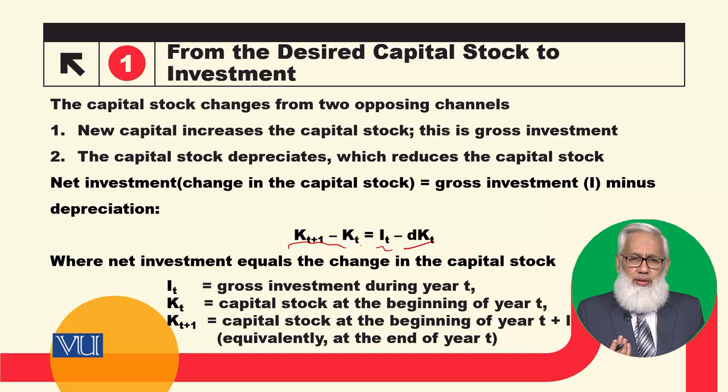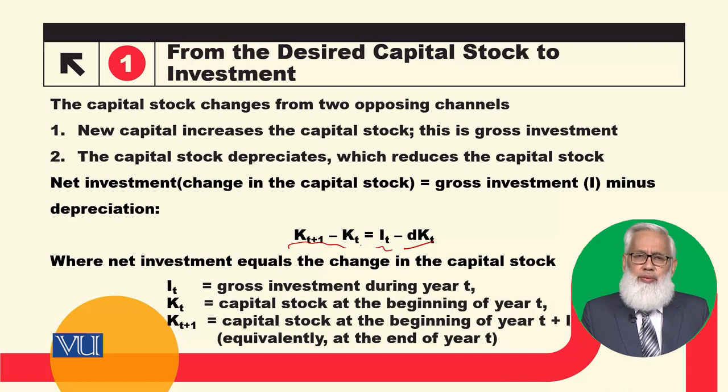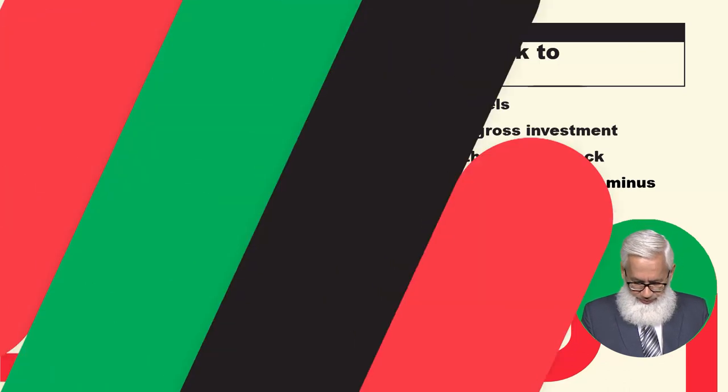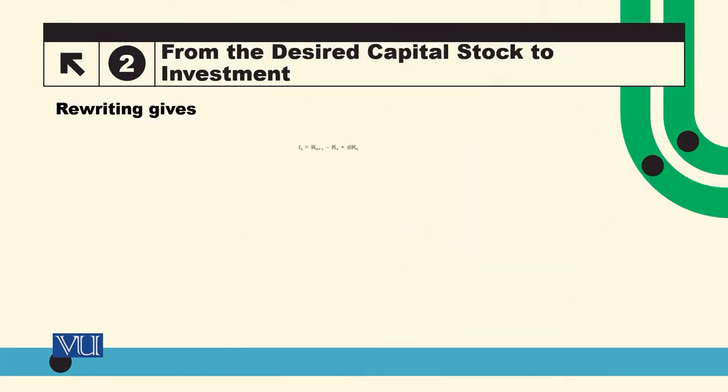Number one, gross investment means that we have added a new amount of capital. Minus depreciation is the amount by which capital is reduced. So if we rearrange this expression, gross investment IT equals KT+1 minus KT, which is the addition to existing capital stock in time period T, plus DKT, the depreciation.